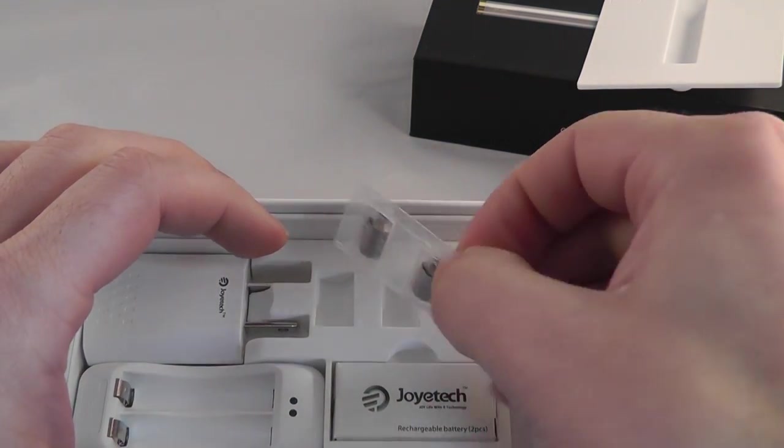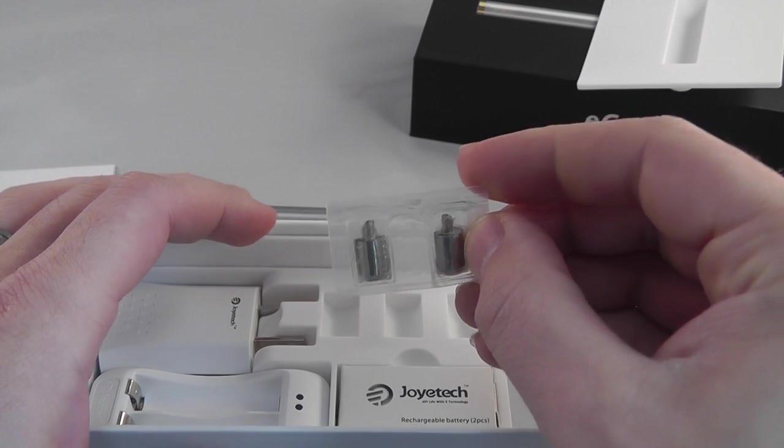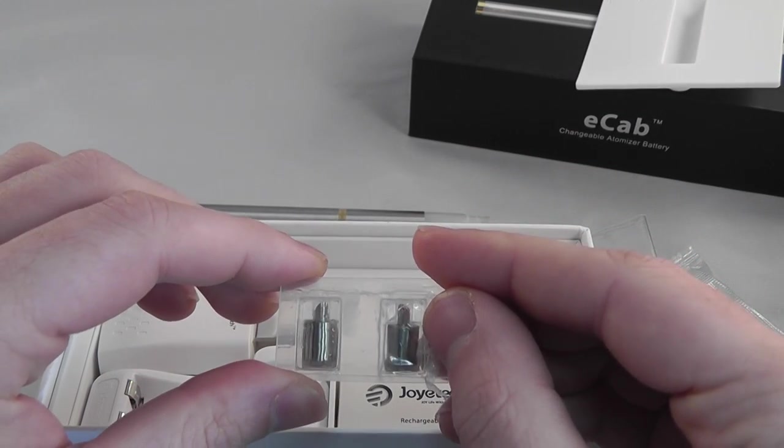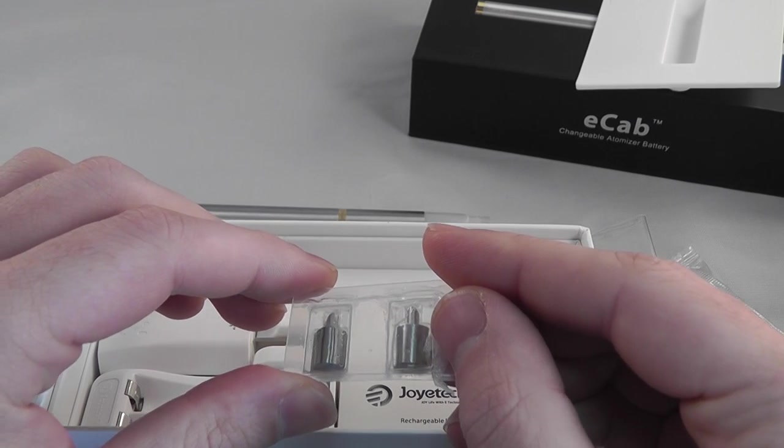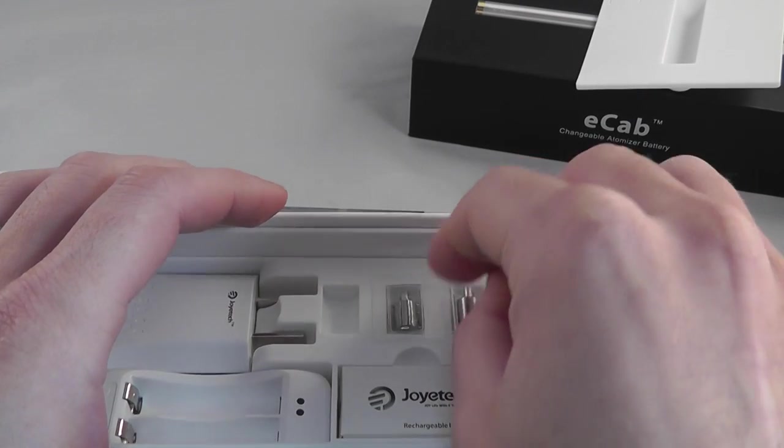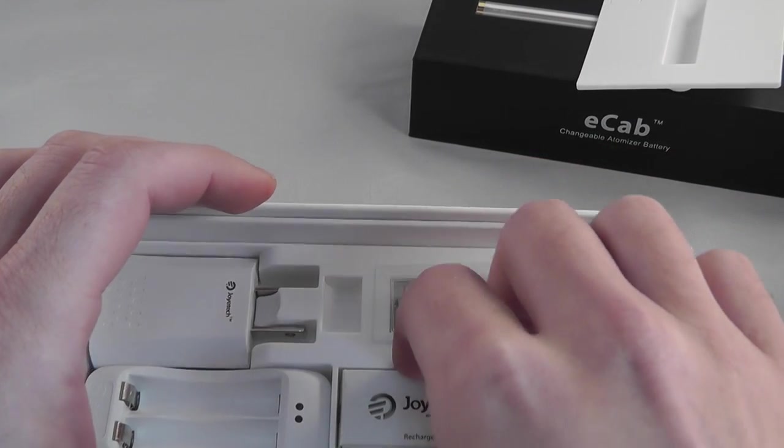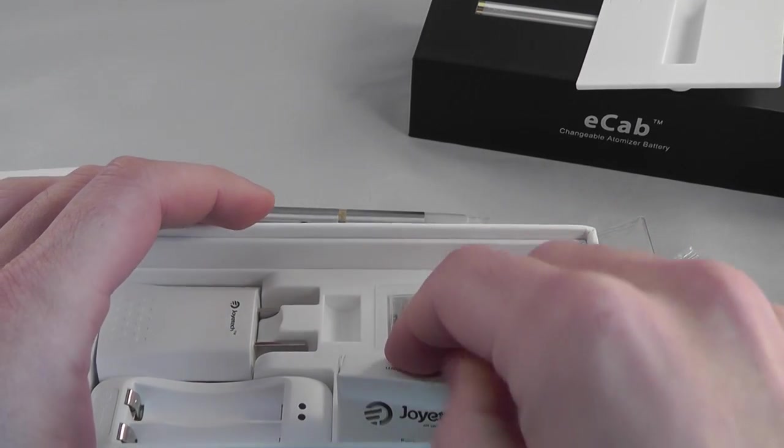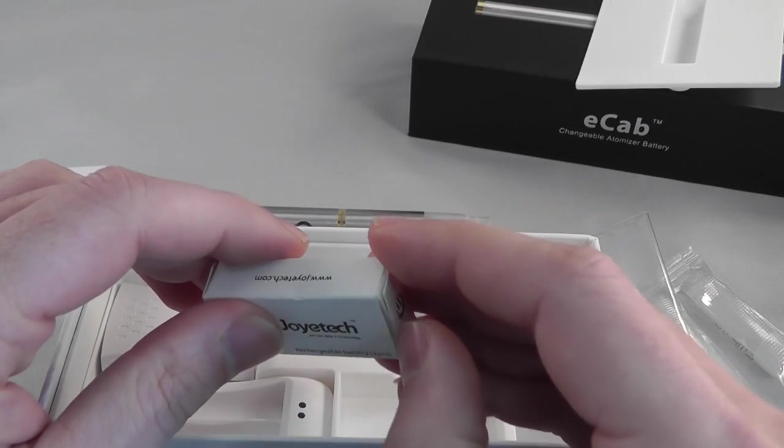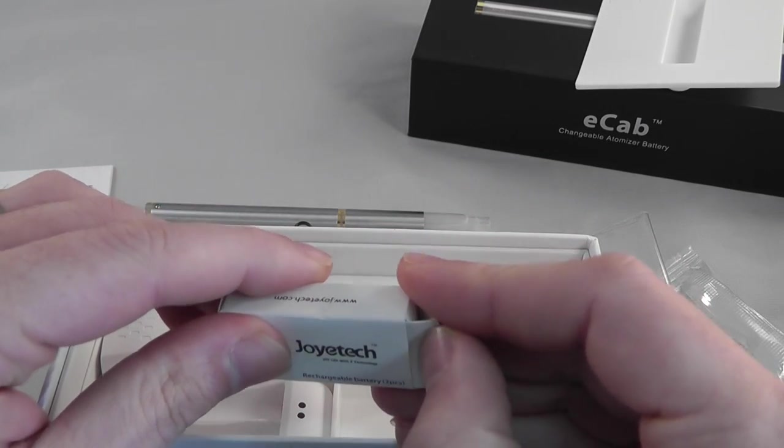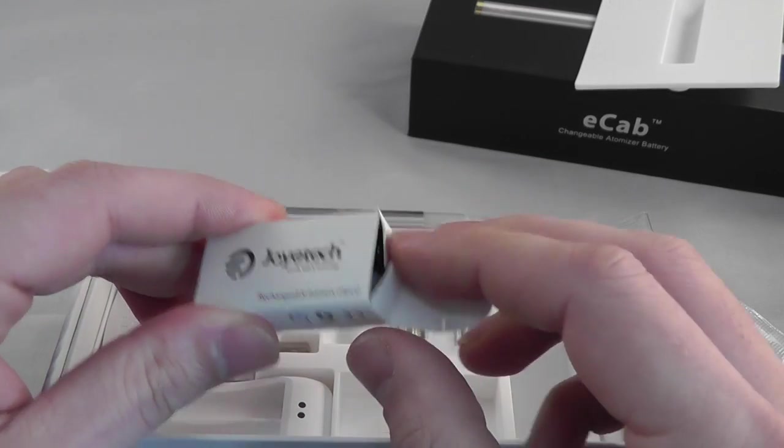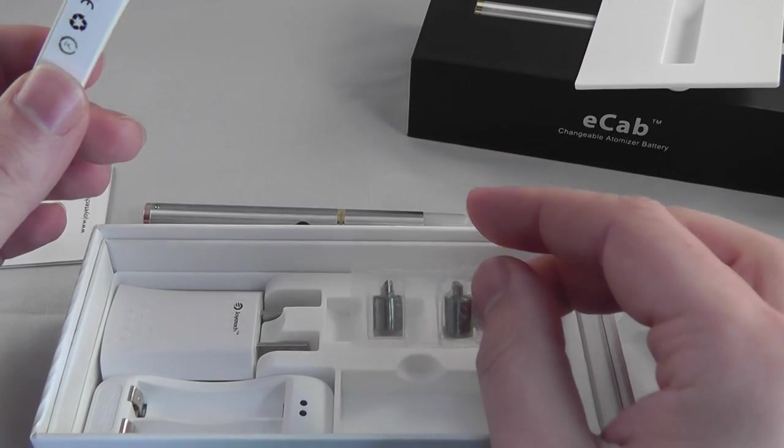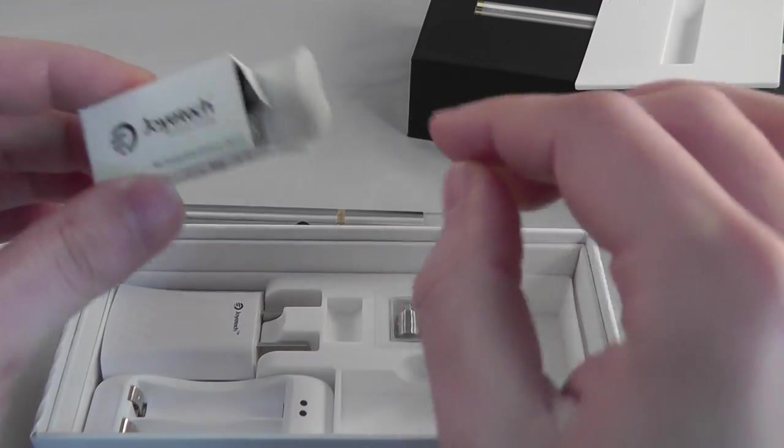You have a couple of atomizers. These are what we call atomizer heads. These are actually the same atomizer heads that are in the Ego-C model of electronic cigarettes. So they're very prevalent, they're already out on the market, easy to find, fairly cheap in relation to other atomizers out there. It's a lot cheaper to just replace this little atomizer head than it is to replace an entire atomizer assembly.